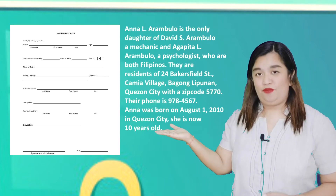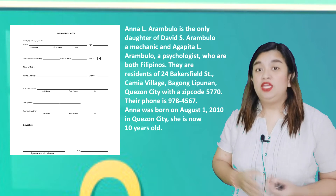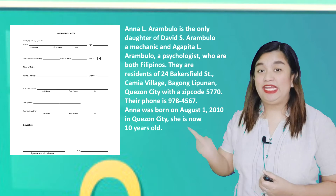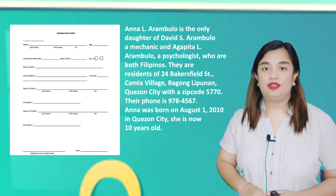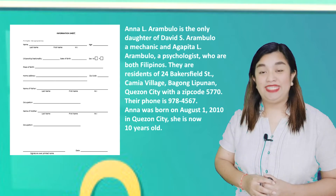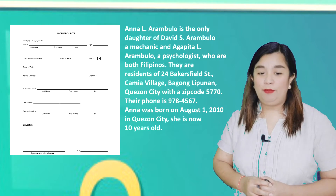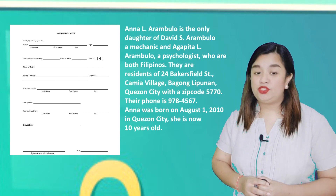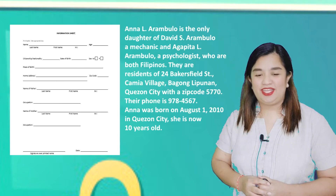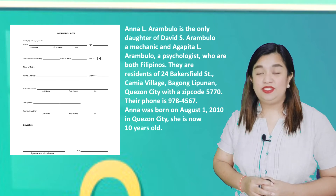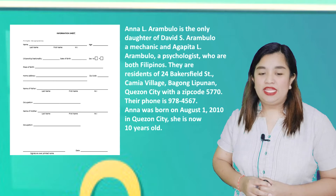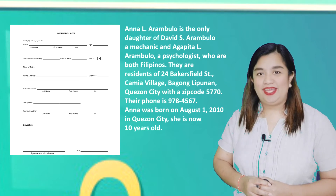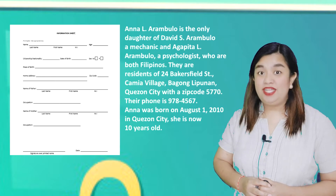Now this is an information sheet. This is used in securing someone's personal information. Beside it is a paragraph containing the details needed in the information sheet. Let us read it. Anna L. Arambolo is the only daughter of David S. Arambolo, a mechanic, and Agapita L. Arambolo, a psychologist, who are both Filipinos. They are residents of 24 Bakersfield Street, Camya Village, Bagong Lipunan, Quezon City, with a zip code of 5770. Their telephone number is 978-4567. Anna was born on August 1, 2010, in Quezon City. She is now 10 years old.